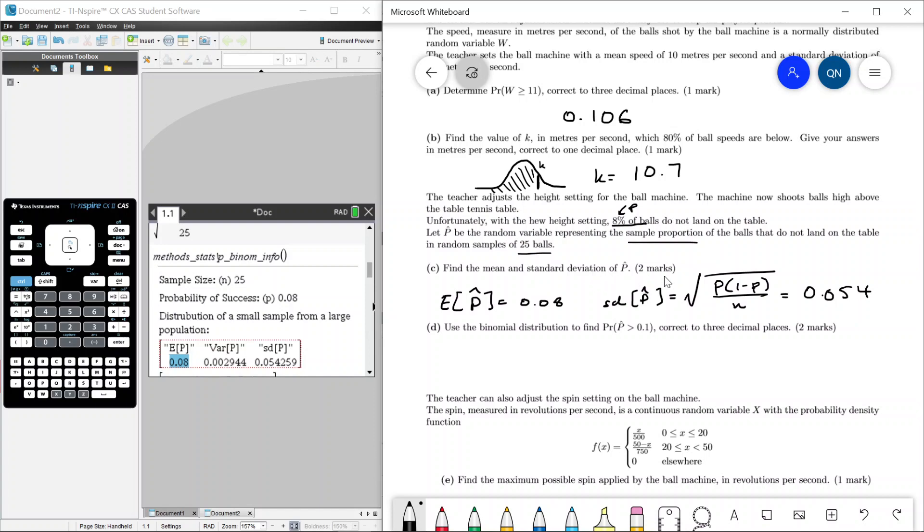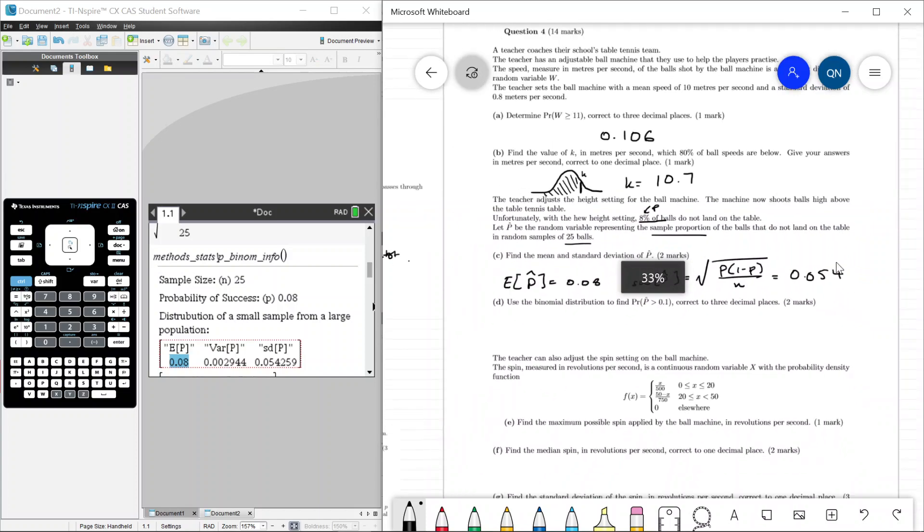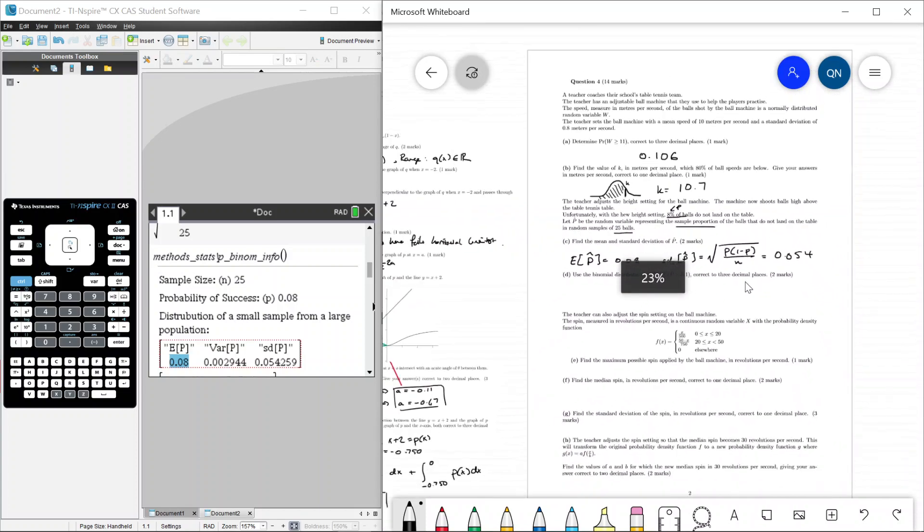It is called p binom info. If you run the program, sample size is 25 and the probability of success is 0.08. Expected value 0.08 and standard deviation is 0.054. It doesn't say decimal places, I'm not too sure if you should put this in exact or not, but I'm sure they'll accept decimal places.